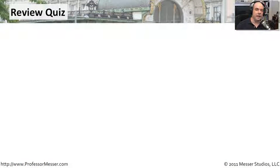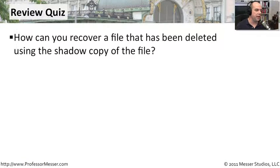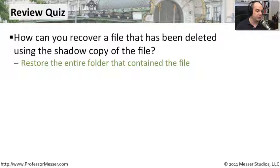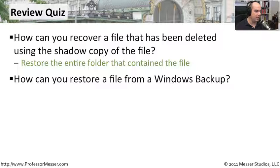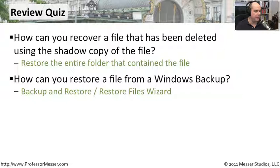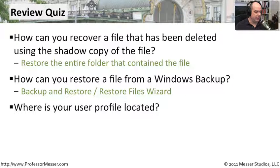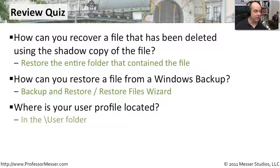Let's review some items we've learned from this file recovery options module. First question: how can you recover a file that's been deleted using the shadow copy? If the file's been deleted, you probably can't go back to that original file, so you'll need to restore the entire folder that contained the file. Next question: how can you restore a file from a Windows backup? Simply go to your Control Panel under Backup and Restore and choose the Restore Files wizard. And the last question: where is your user profile located? If you had to restore somebody's entire profile, you would look in the /users folder.